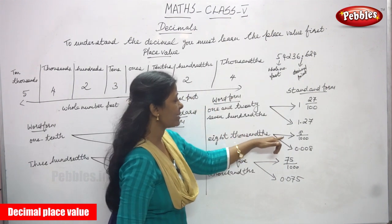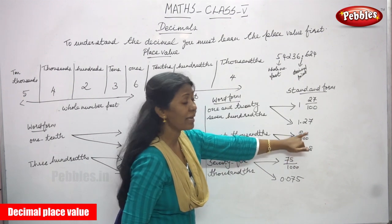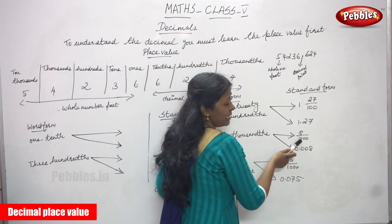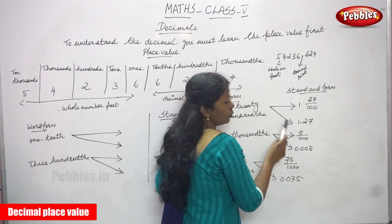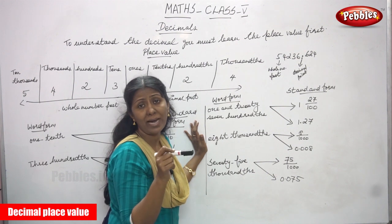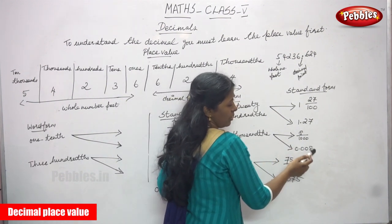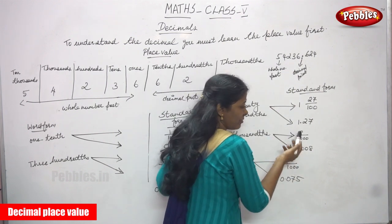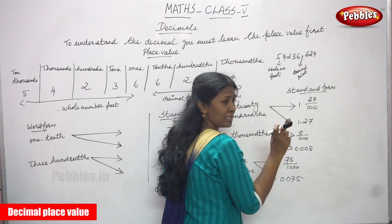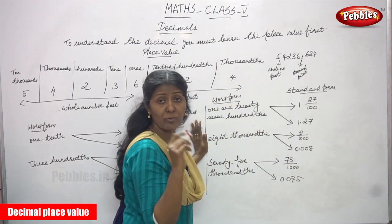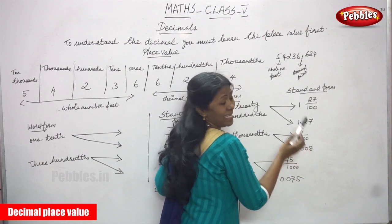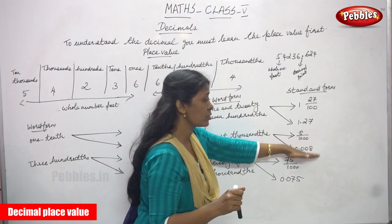And eight thousandths — in word form it is 'eight thousandths', in standard form it is eight by thousand. The denominator has three zeros but there is only one digit in the numerator. So you need two more digits. There is no number, so you add two zeros after the point, then write the numerator. The answer is 0.008: zero in the tenths place, zero in the hundredths place, and eight in the thousandths place.